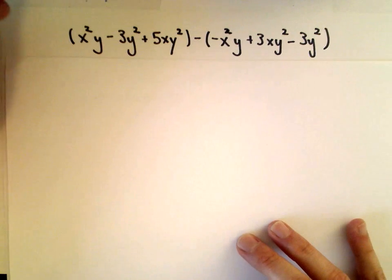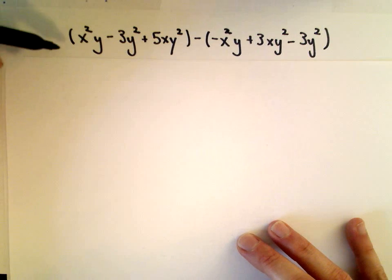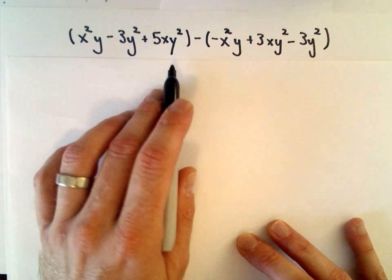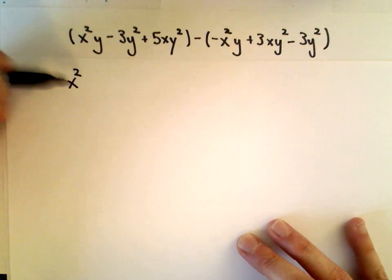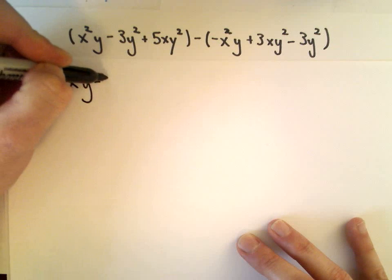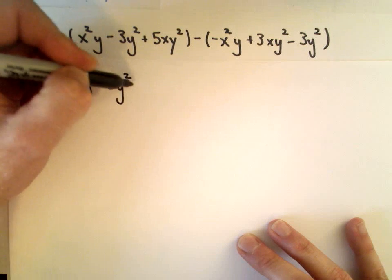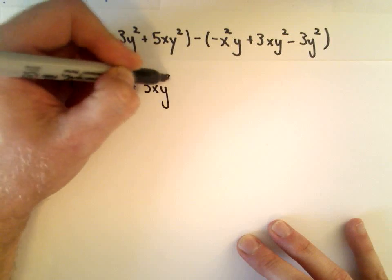You can imagine in front of the first set of parentheses there's just a positive one, so we can just remove the parentheses from this first expression. I'm just going to rewrite everything: x squared multiplied by y, minus 3y squared, plus 5xy squared.